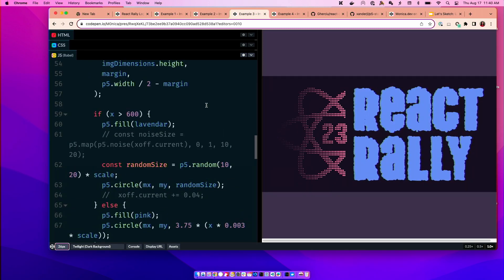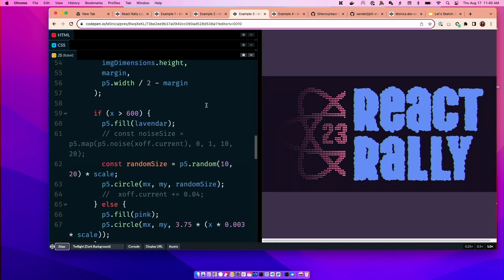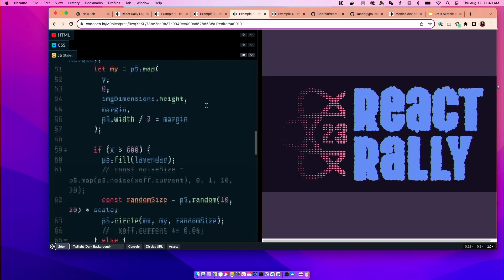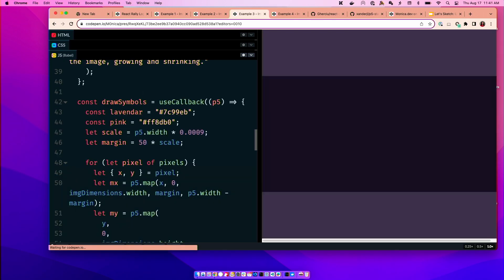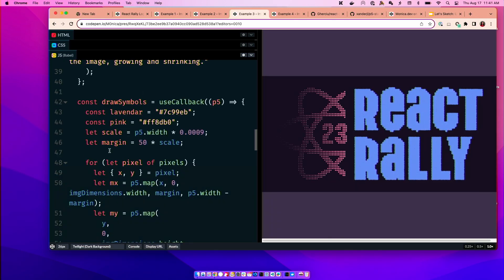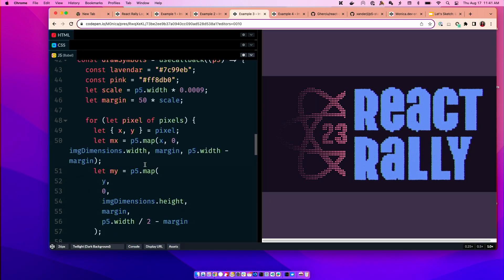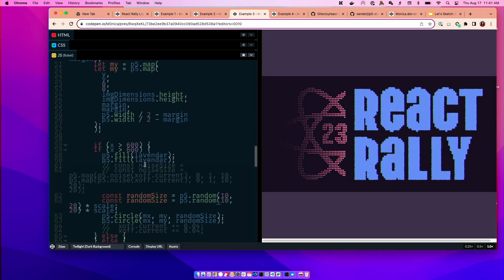And then if we wanted to have some movement within this illustration, then where we set the size of the pixels, instead of having a set size, we can use random, P5 random, which you can pass in two different values. And then it'll give you a number between those values. And depending on the scale that you set, it will look different.